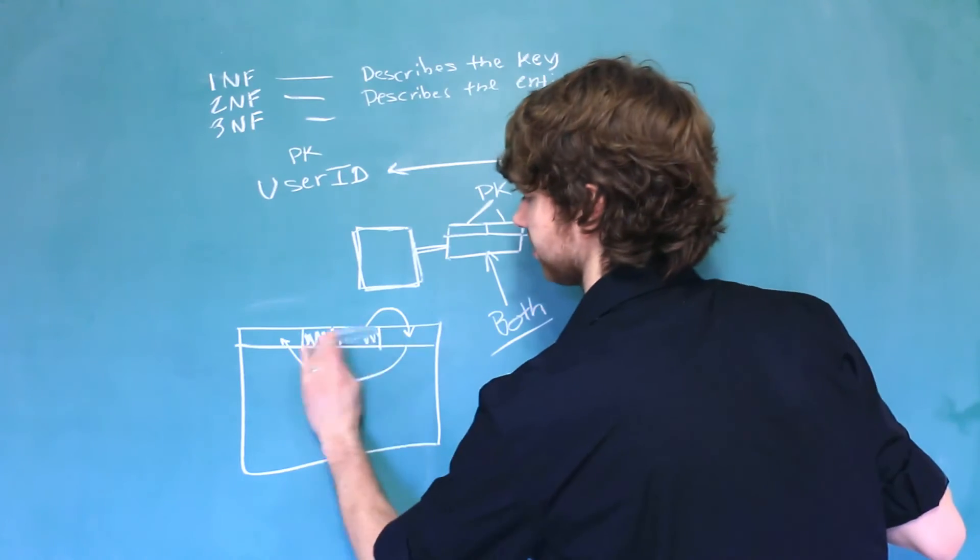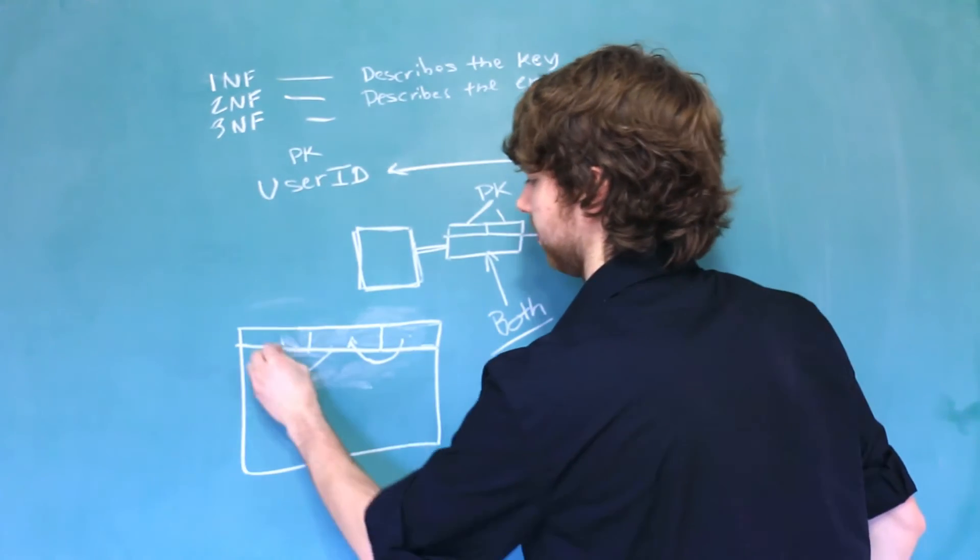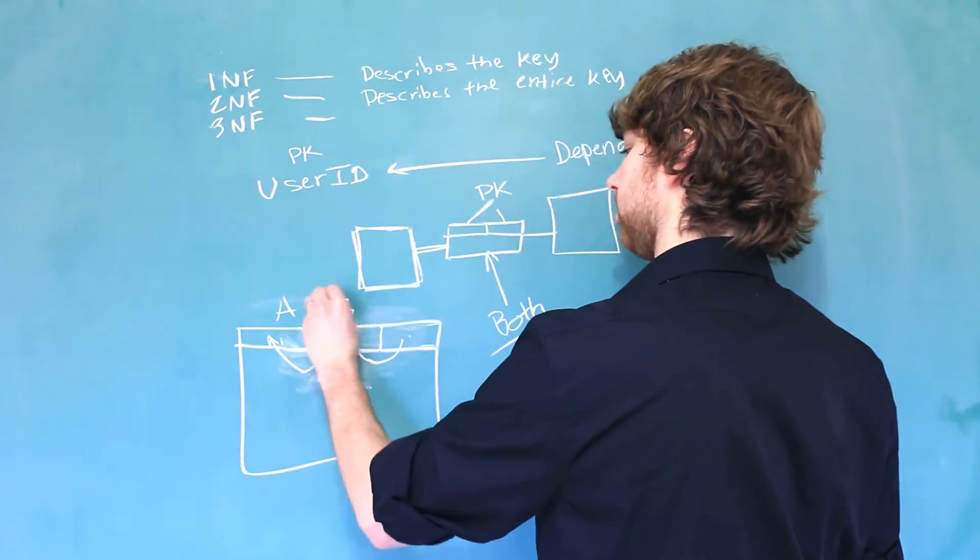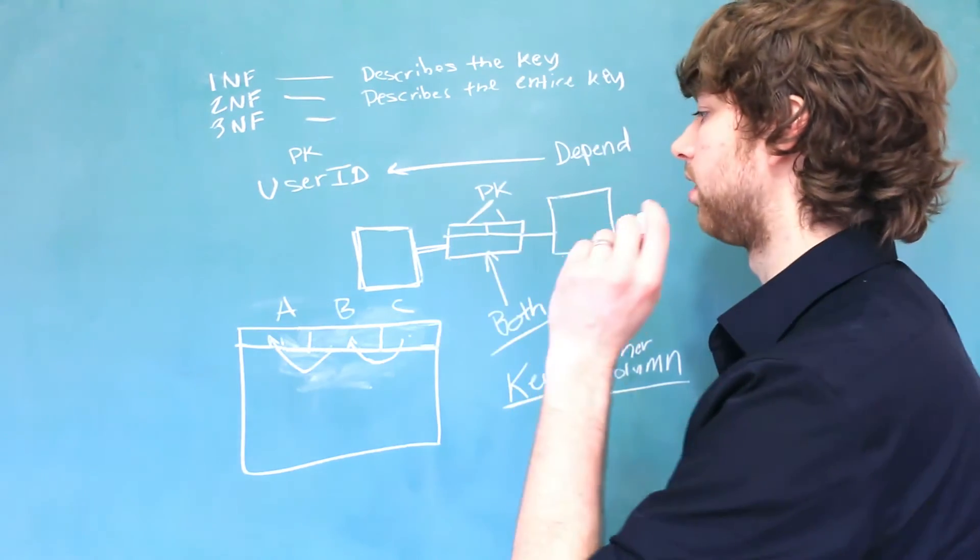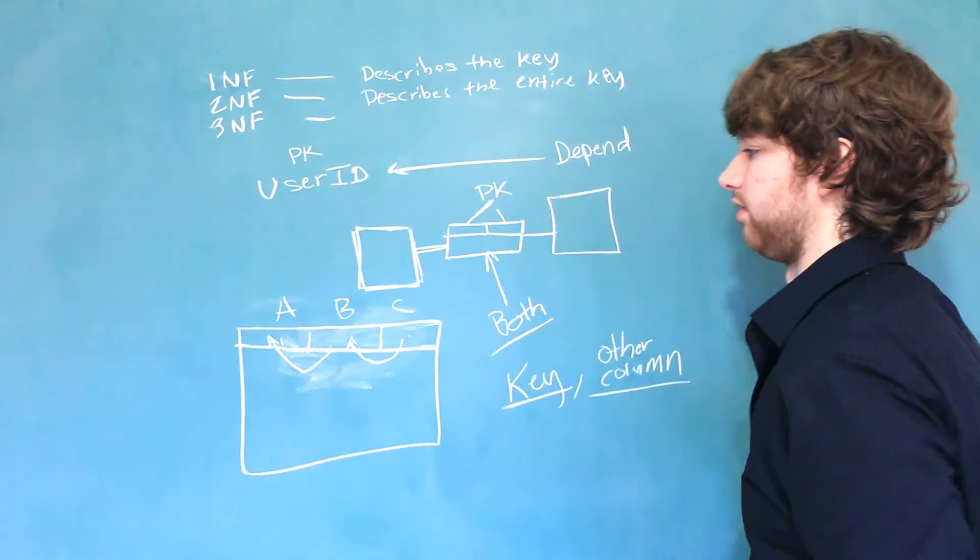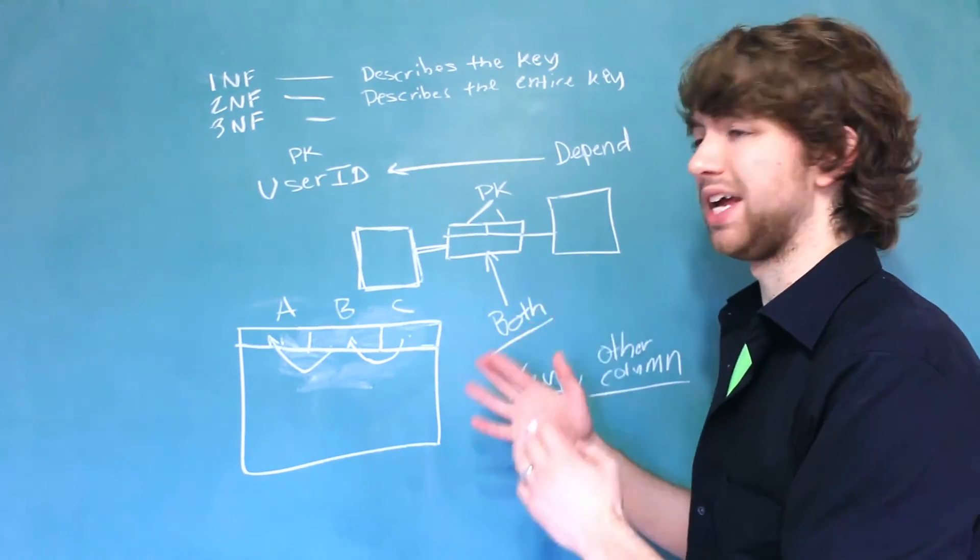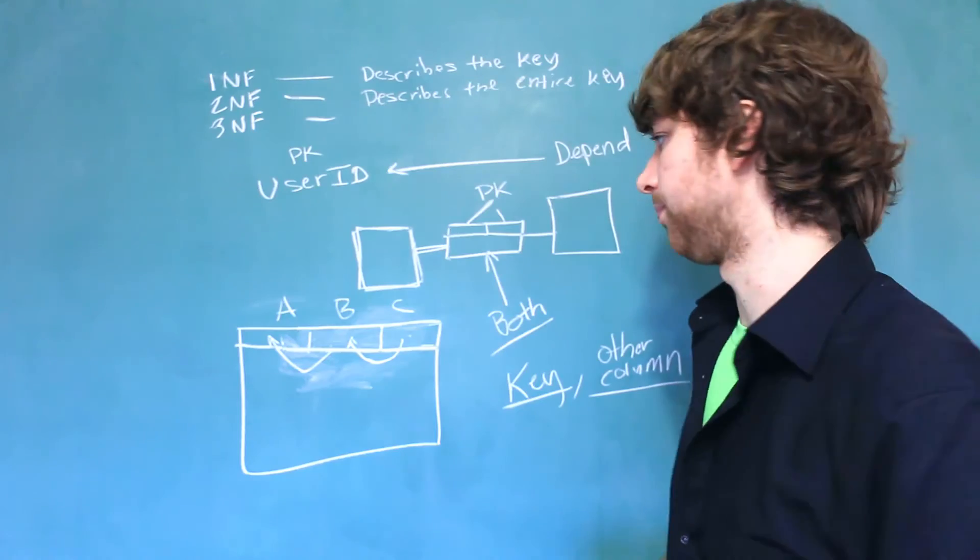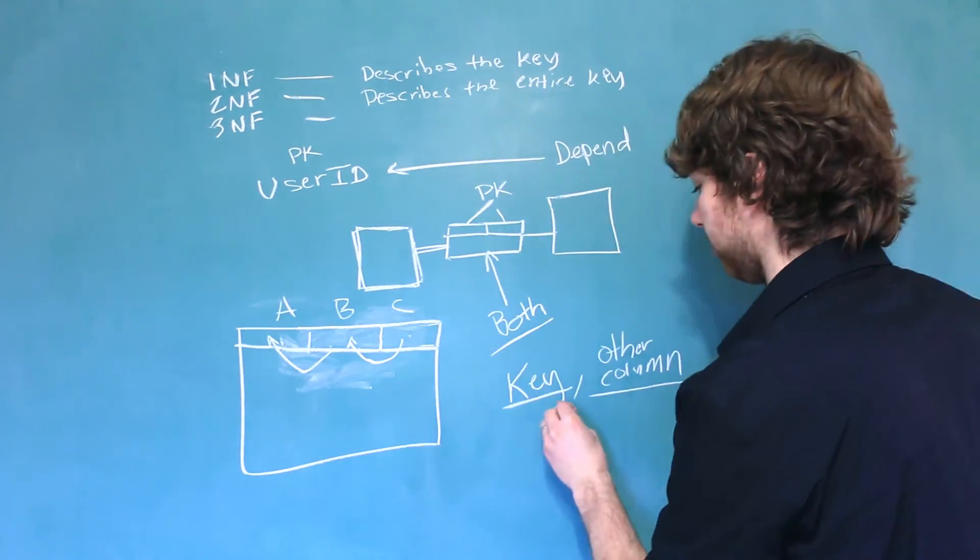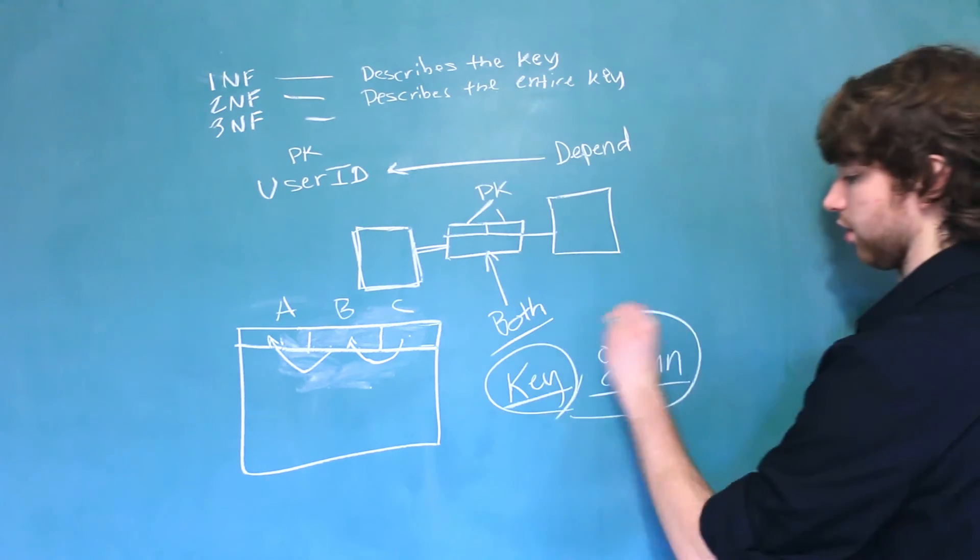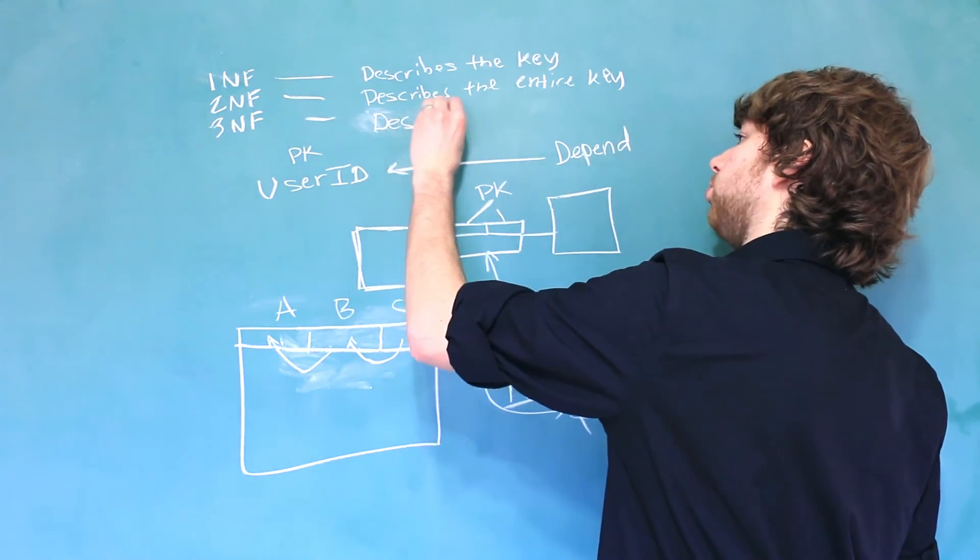It might be a little easier to think about this if we switch these columns. So, let's say this one depends on this one, which depends on this one. So, if we had to label these A, B, C, we would say C depends on B and A. So, third normal form gets rid of these transitive dependencies. Another way to word that is to say that every column depends only on the primary key. So, in this situation, C doesn't only depend on A. That's because it depends on the key and another column. So, third normal form makes sure that every column describes only the key.